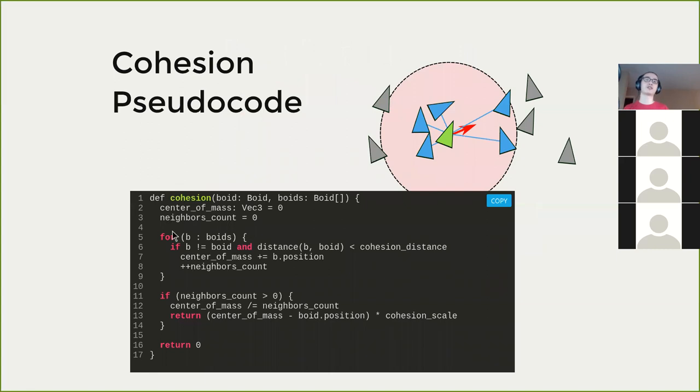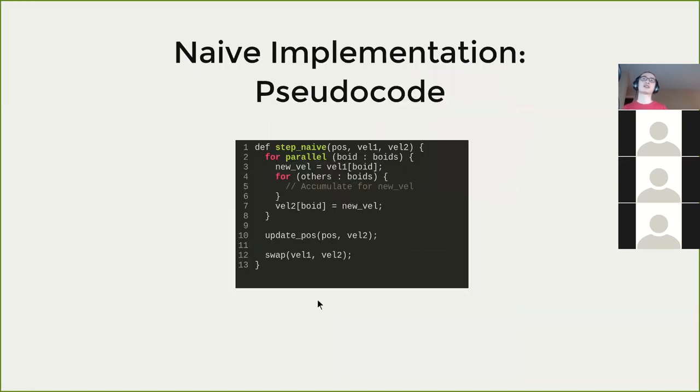The pseudocode is also almost the same, just calculate the center of mass by accumulating all the mass and then divide by the neighbors count, and then try to make our boid steer towards the center of mass. With all those three parts, we can have our boid algorithm. Pretty simple. We just have a nested for loop. This for parallel syntax in the pseudocode means I want to launch a CUDA kernel to do the stuff because we can use CUDA to get way better performance than sequential code. Inside the kernel, we need to loop through all the boids again to accumulate a new velocity and then get a new velocity.